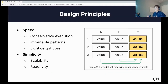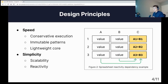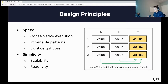So how do I achieve its performance and simplicity? I need to follow two main design principles: speed and simplicity. For speed, I utilize conservative execution — only doing things when they're necessary — and immutable patterns, which is assuming everything doesn't change by default, to hypercharge the compiler render process.